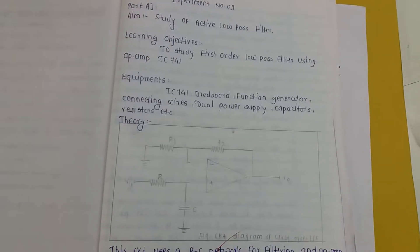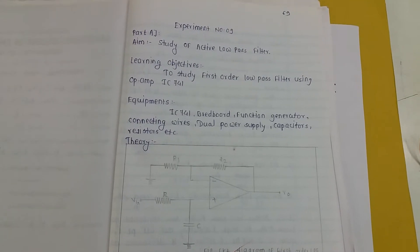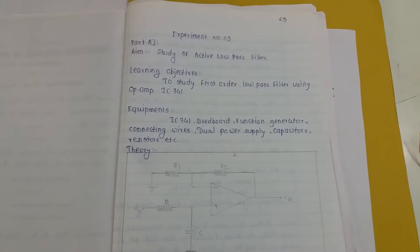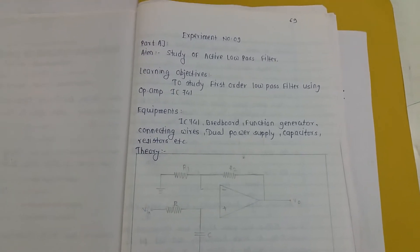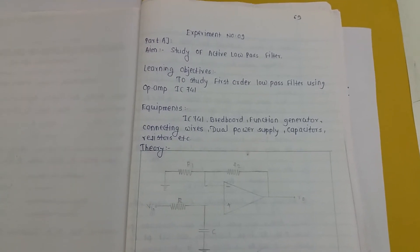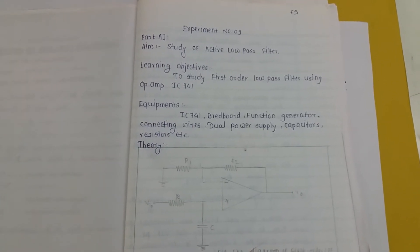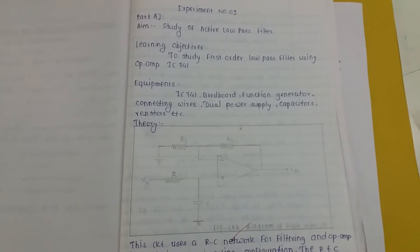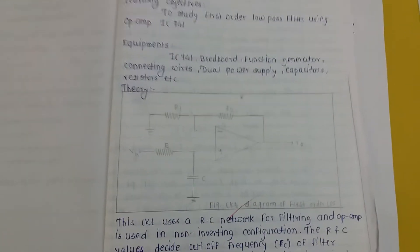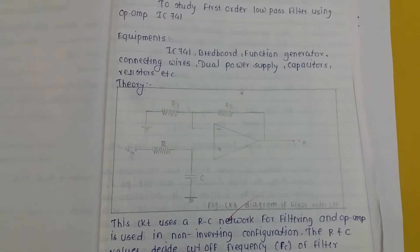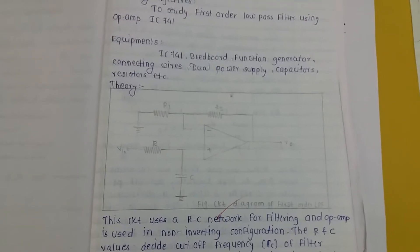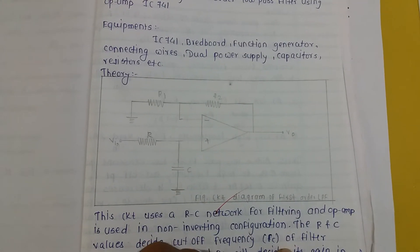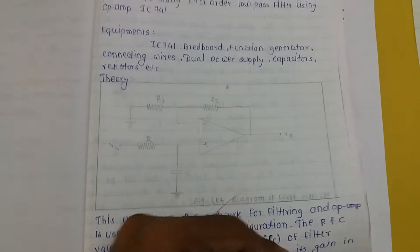Welcome everyone. Today you are going to learn about filters. There are two types: the low pass filter and the high pass filter. First, we will look at the low pass filter. This is the basic circuit diagram for low pass filters.